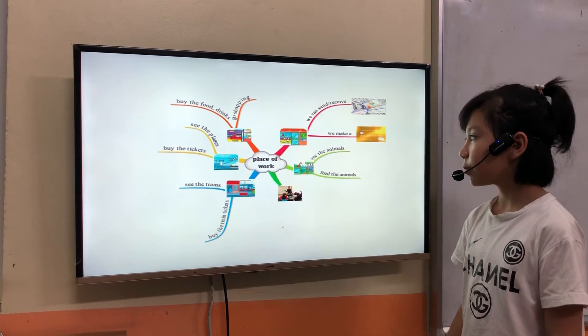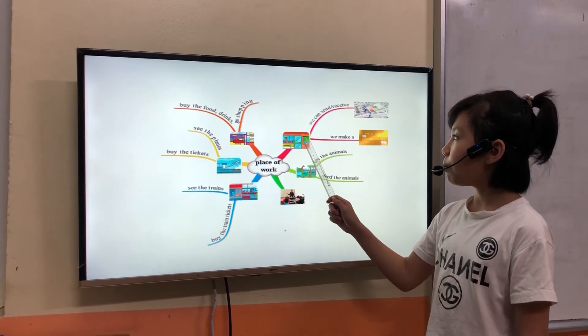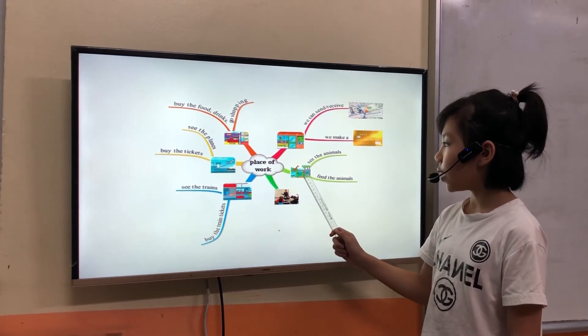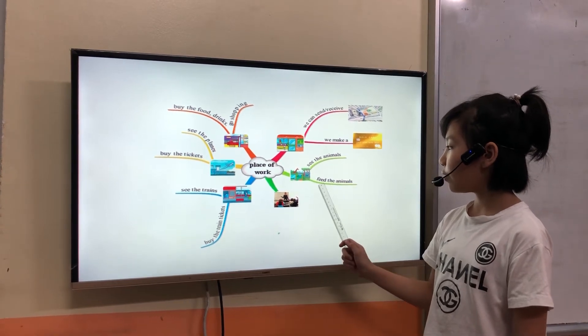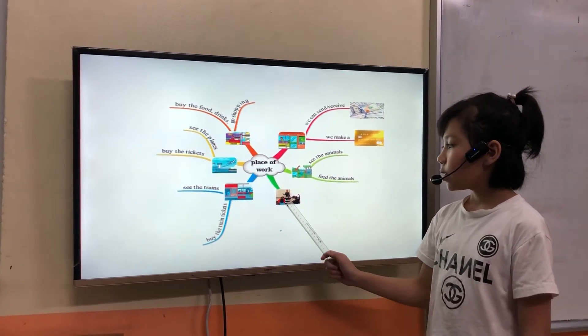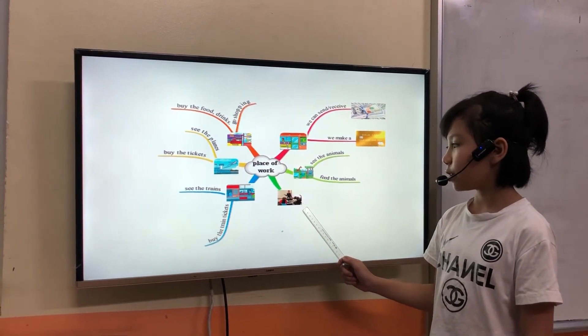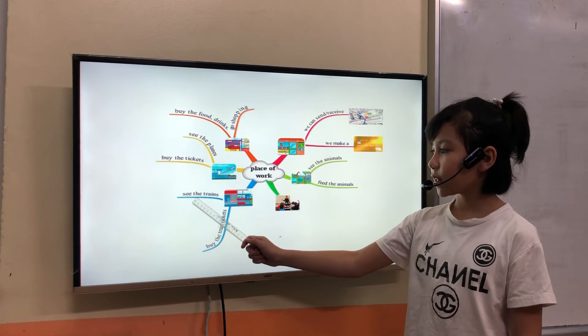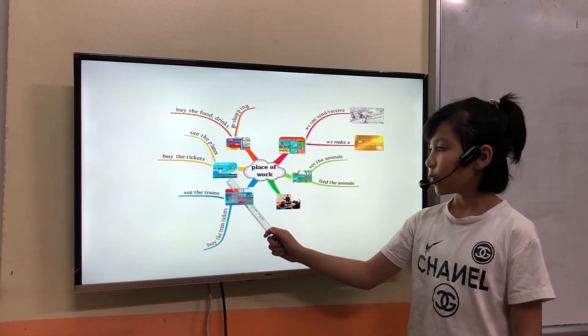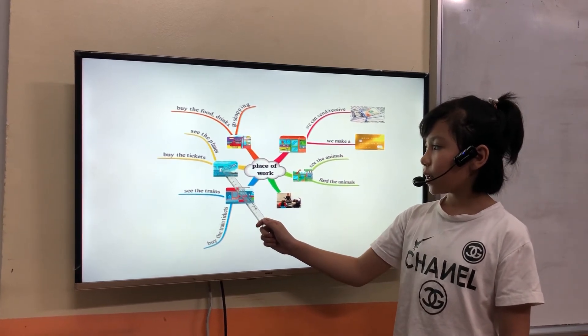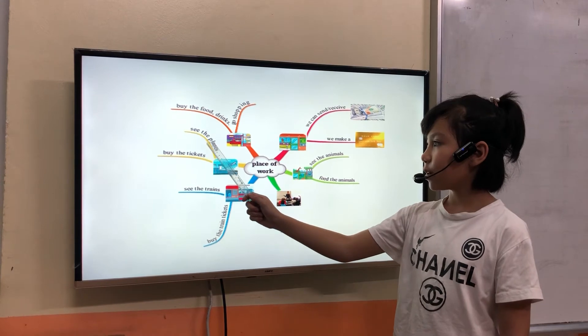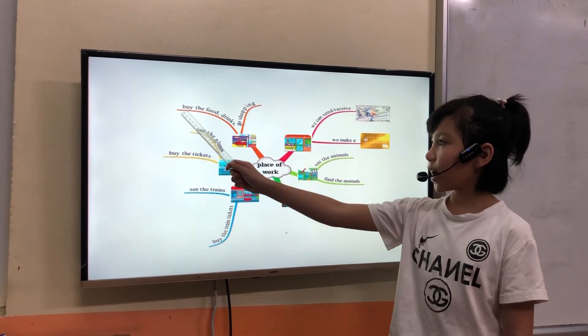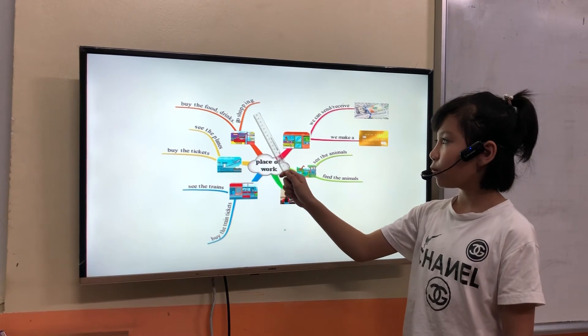Tell me some place of work. We can see the train and buy the train tickets. She works in an airport. We can see the plane and buy the tickets. She works in a supermarket. We can buy the food and drink. I like to go shopping.